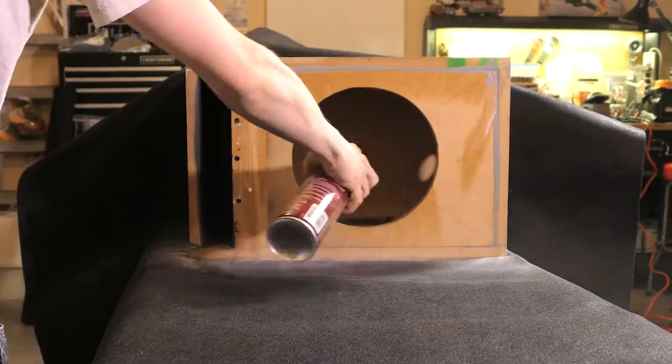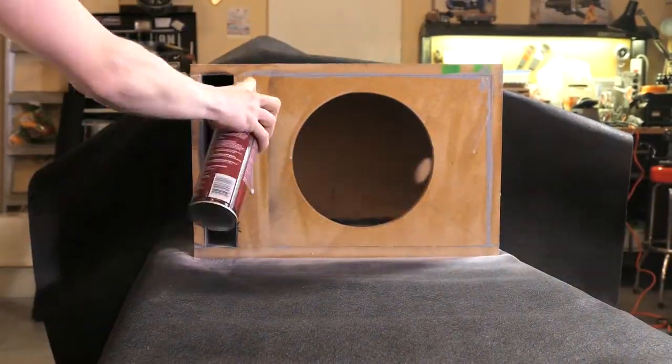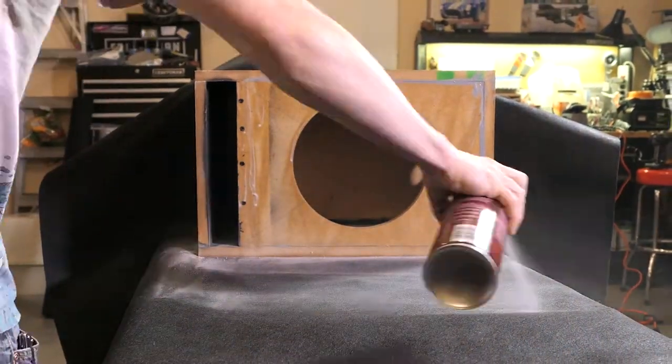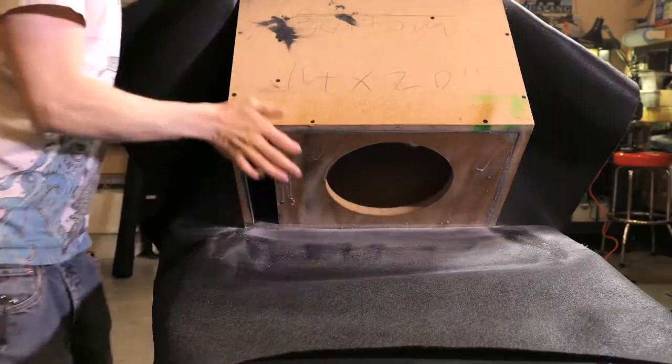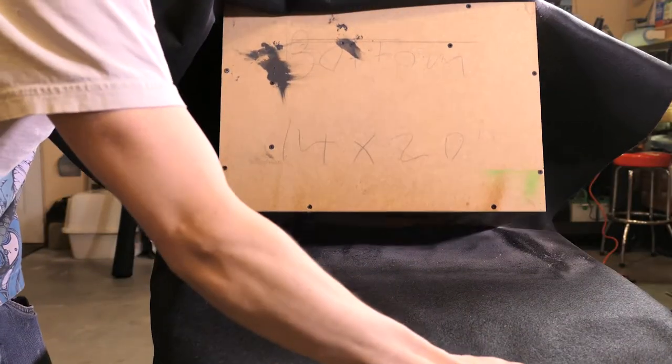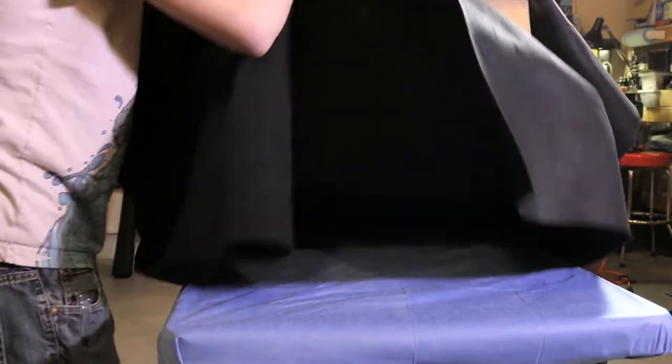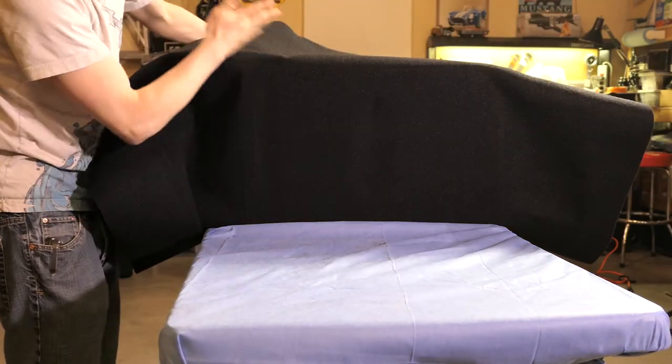Next I'll basically do the same thing with the front but I'll try to avoid getting glue in the freshly painted port as much as possible. Again I'll pull the carpet tight around the edge when sticking it together and smooth out any wrinkles with my hand.